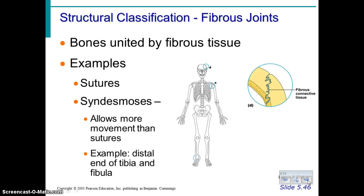The second way to classify joints is by how they're put together, or by their structure. The first of these are fibrous joints, which are simply connected by fibrous tissue. We looked at the sutures in the skull during the bone lab, and what you notice is that they're irregular — it's not just flat bones sitting next to each other. It's both the fibrous connective tissue and that structure of irregular bone edges that keeps the skull bones in place.